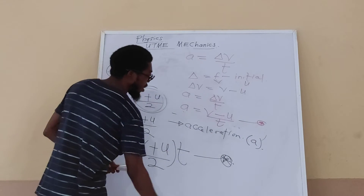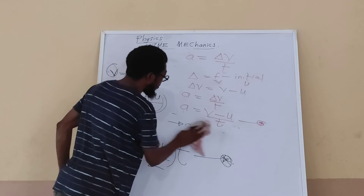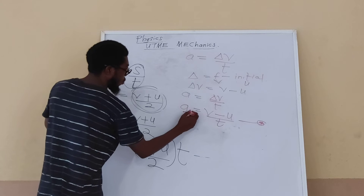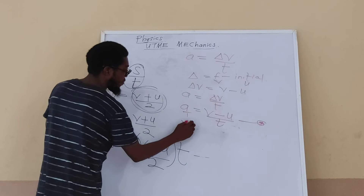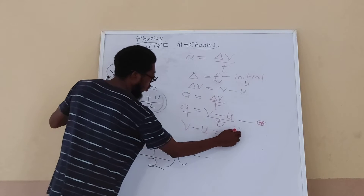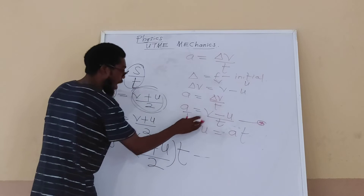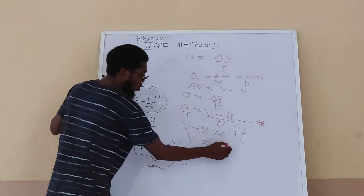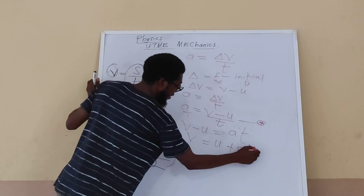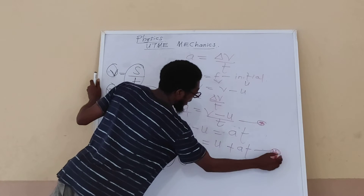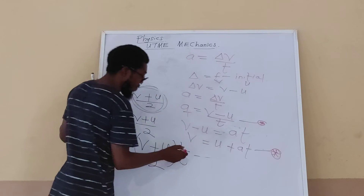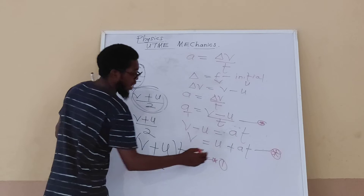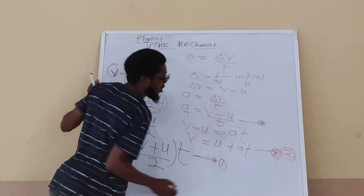From the definition of acceleration I can make v the subject of the formula. Cross-multiplying gives v − u = at, and taking u to the other side gives v = u + at. This is a very important equation. I'll call the first equation (s = (v+u)/2 × t) equation 1, and this one (v = u + at) equation 2.